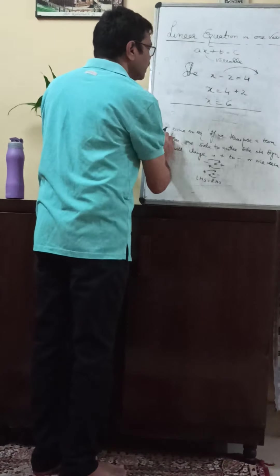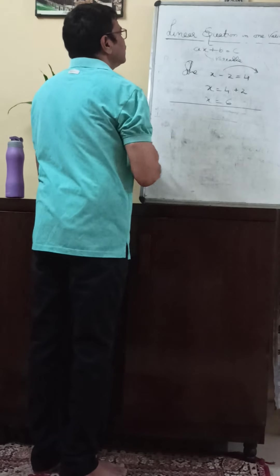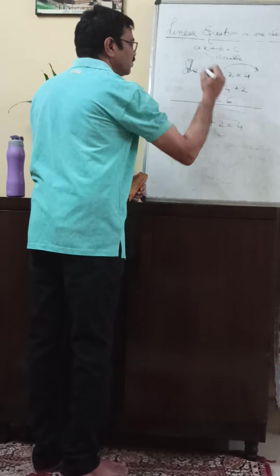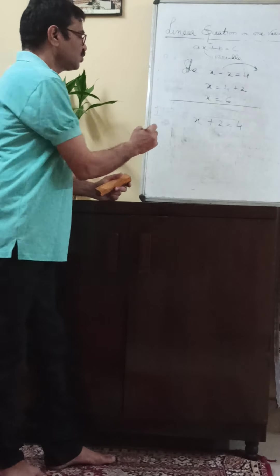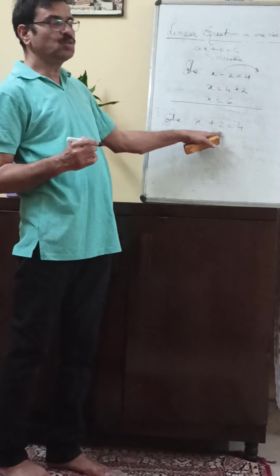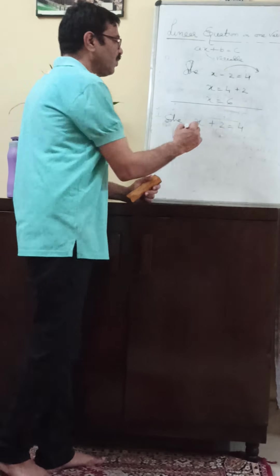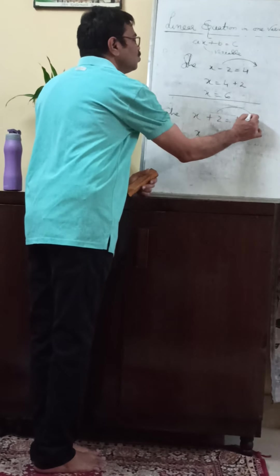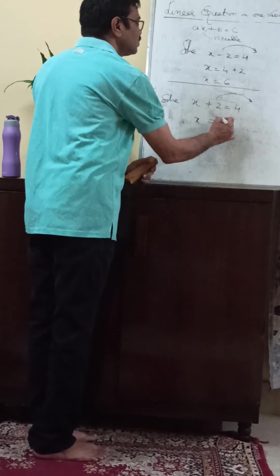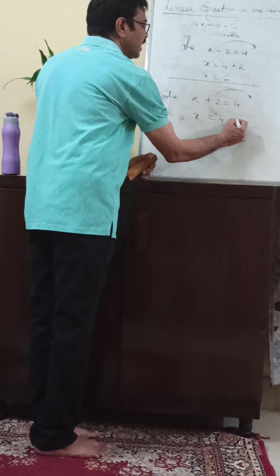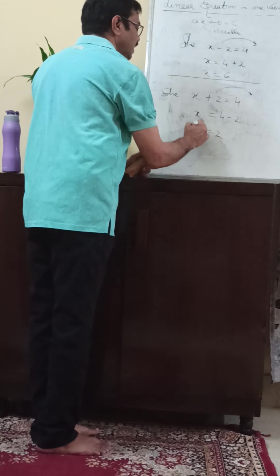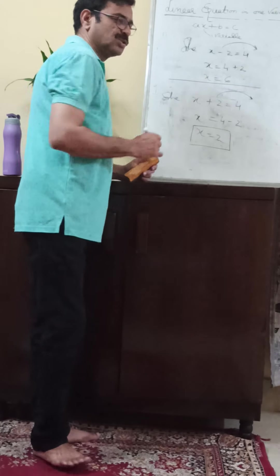Now I will give one more example. Solve: x plus two is equal to four using the transposition rule. Here, two has a positive sign. When I transpose this two to the right-hand side, its sign will become negative. So x is equal to two. So x equals two is the solution of the equation.